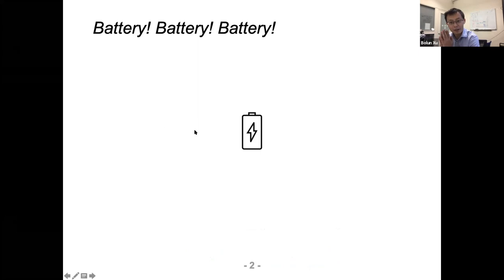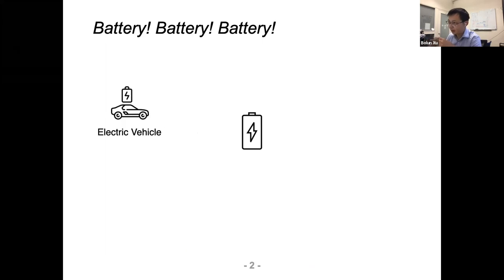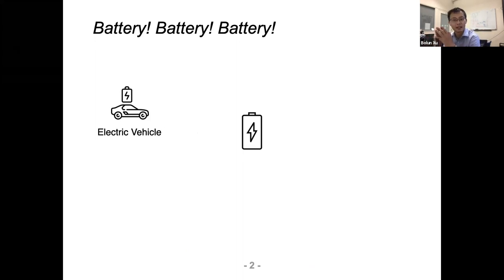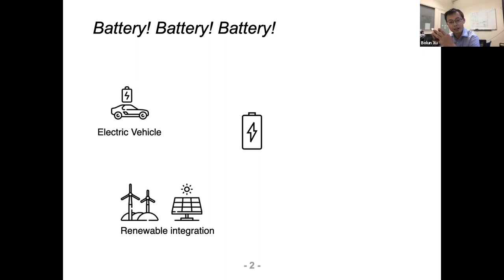Battery is becoming a key topic for the future energy system with many different applications. The most popular one is battery-powered electric vehicles. Many regions — California, and countries like the UK — have declared target dates to ban the sale of traditional fuel vehicles.